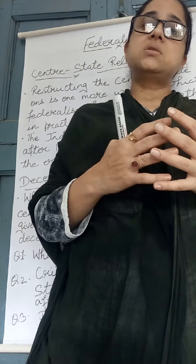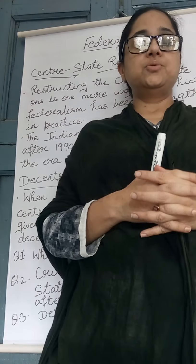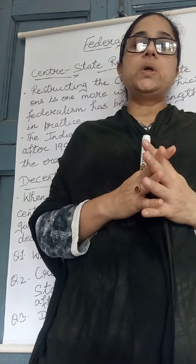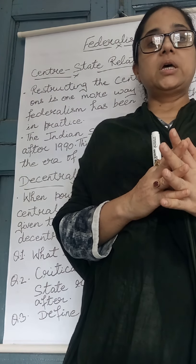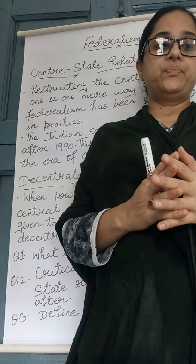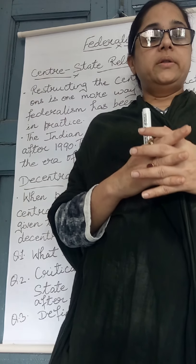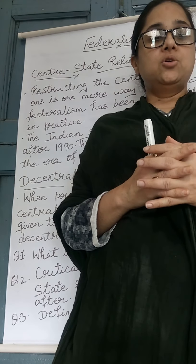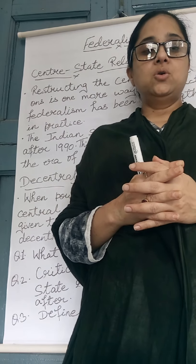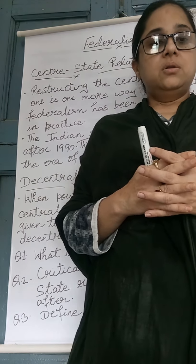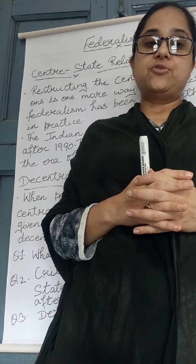How does this relation work between center and state? Powers have been divided between the center and states, and this arrangement has been done through sharing power between them. But in reality it depends to a large extent on the attitude and approach of the ruling parties and leaders as to how they follow these arrangements. The state governments did not always exercise their rights as autonomous federal units.